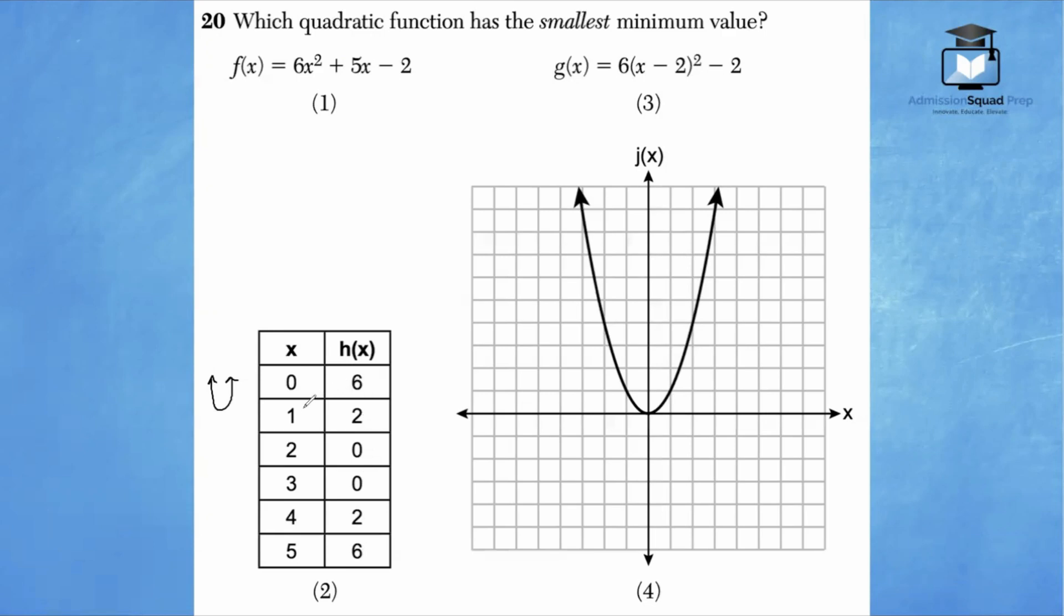we know that the vertex is going to be perfectly in between 2 and 3, which is 2.5, comma, some number beneath 0. So let's estimate negative 0.5. For answer choice 3, this is vertex form. So we typically take the opposite of this number, and we take the same as this number to get the vertex. So our vertex is 2, comma, negative 2, which means the minimum value is negative 2.